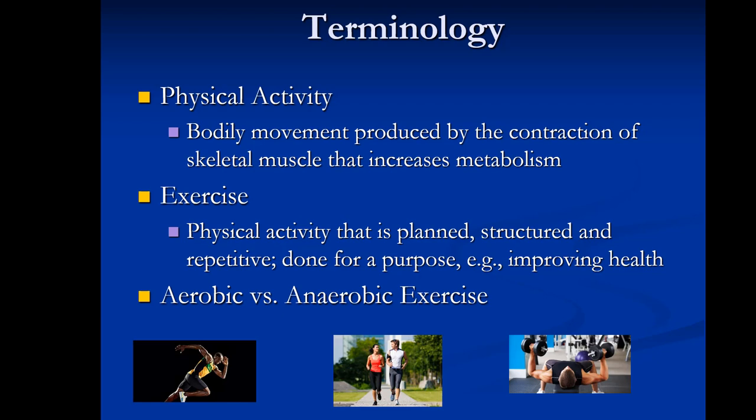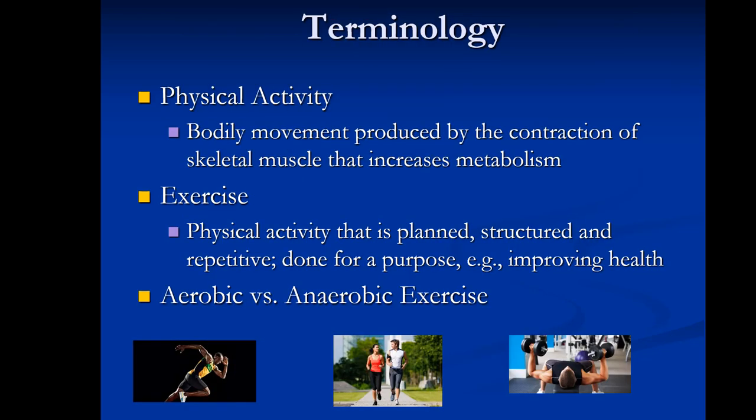Aerobic exercise is exercise that relies heavily on oxidative metabolism. Anaerobic exercise does not. Examples of aerobic exercise include jogging at a moderate pace, cycling at a moderate pace, or distance events such as a long run, half marathon, or marathon. Anaerobic exercise includes higher intensity activities such as weight lifting or sprinting.